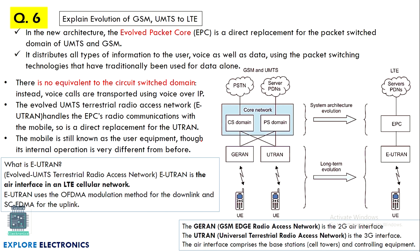Next: explain the evolution of GSM, UMTS, and LTE. This block diagram is very important — it shows how the evolution actually occurred, which is called Long Term Evolution (LTE). This circuit with a little bit of explanation and expansion for what is GERAN, UTRAN, and what is circuit switched and packet switched network needs to be written here.